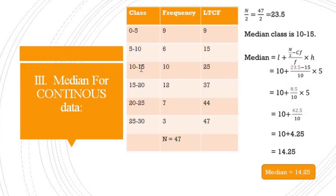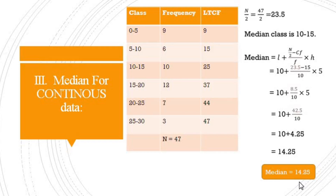Applying the formula: Median = L + ((n/2 − cf) / f) × h. Here L = 10, cf (cumulative frequency preceding median class) = 15, f (frequency of median class) = 10, and h (class width) = 15 − 10 = 5. Calculating, median is equal to 14.25.